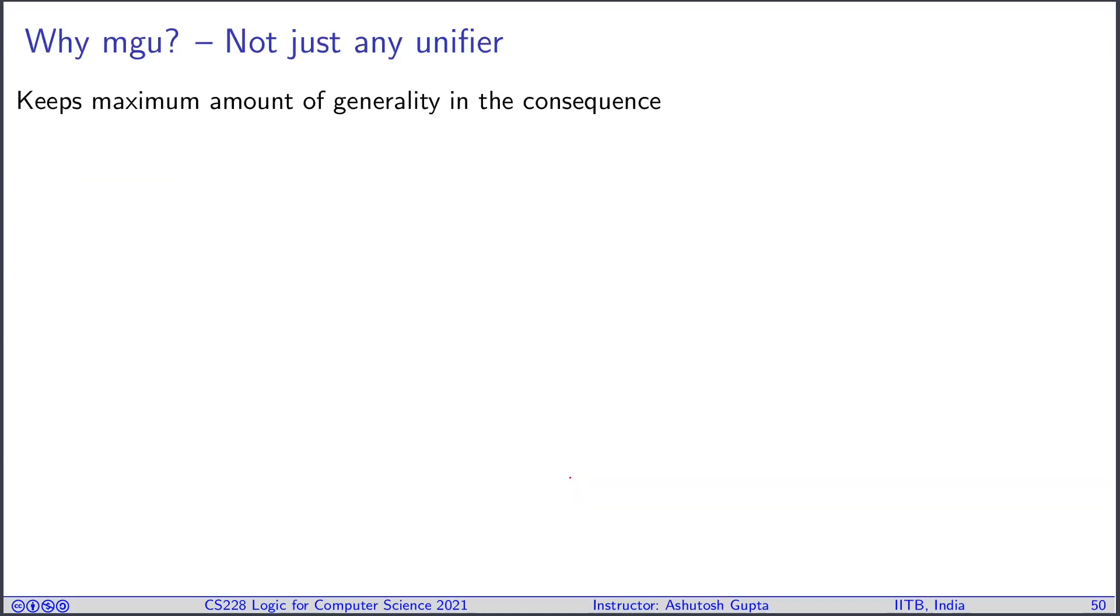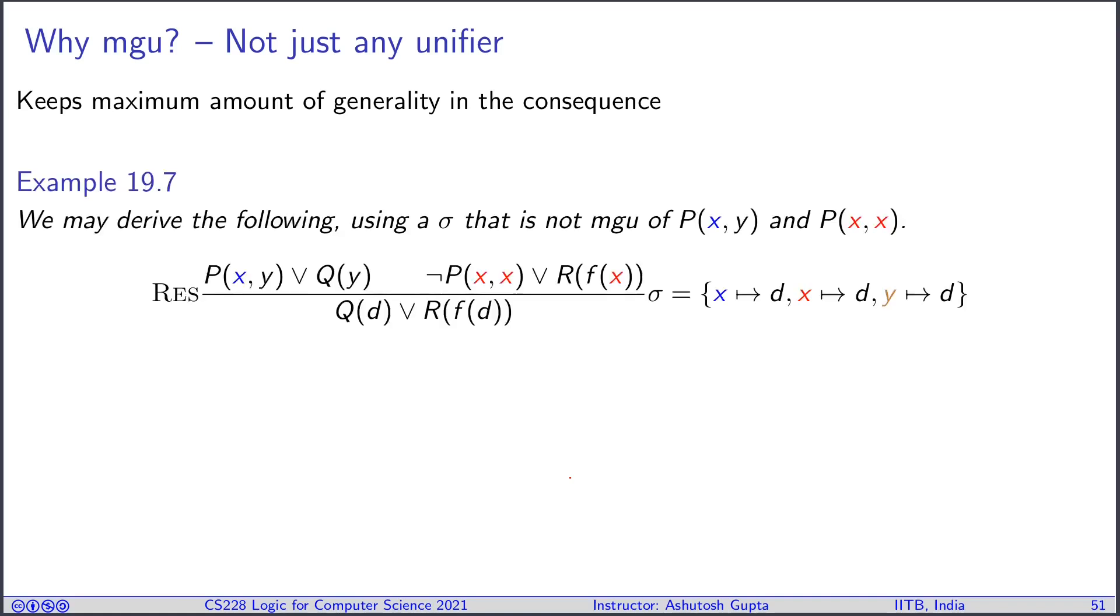Now a natural question comes: why are we using MGU? Why not any unifier? It keeps the maximum amount of generality in the consequence. That's the reason. Actually we can use any unifier. However, MGUs ensure that we don't lose generality very quickly and our ability to prove things in future becomes too restrictive. It keeps our options open.